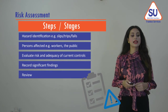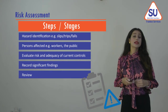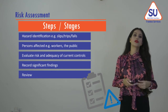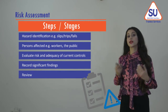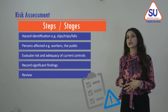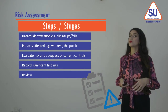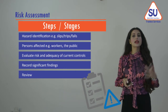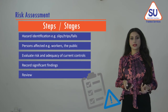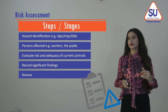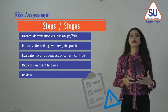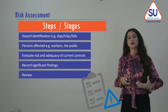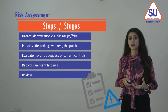Third, we need to evaluate the level of risk and adequacy of our current control measures. If no current controls exist, we need to decide on suitable control measures. Then we move on to recording significant findings, since risk assessments are a legal requirement and records serve as evidence to present to authorities if something goes wrong, providing protection to management and the organization. Finally, we need to review the risk assessment regularly, taking into account factors such as time elapsed and any new accident or injury records.